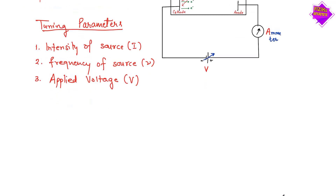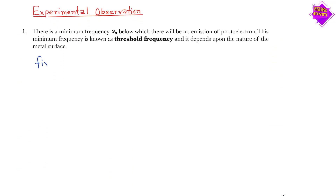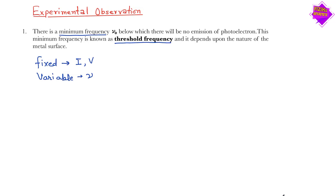For the first observation, the fixed parameters are intensity and voltage, and the variable parameter is frequency ν. There is a minimum frequency ν₀ below which there will be no emission of photoelectrons. This minimum frequency is known as the threshold frequency, and it depends upon the nature of the metallic surface.